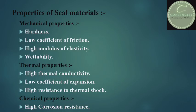Now, the properties of seal materials — what should be the properties of materials used for making a mechanical seal? Mechanical properties: hardness, low coefficient of friction, high modulus of elasticity, and wettability. Thermal properties: high thermal conductivity, low coefficient of expansion, and high resistance to thermal shock. Chemical properties: high corrosion resistance.